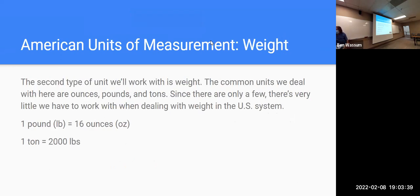We also have weight. One pound is 16 ounces — we really only measure things in ounces when dealing with food or babies, which is a weird comparison. One ton is 2,000 pounds. You can also convert directly from tons to ounces: if one pound is 16 ounces, then one ton would be 2,000 times 16 ounces — 32,000 ounces, which would be a big baby.